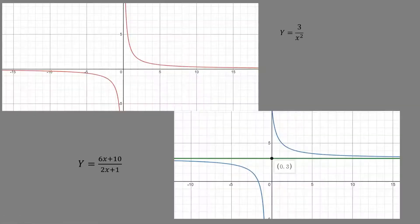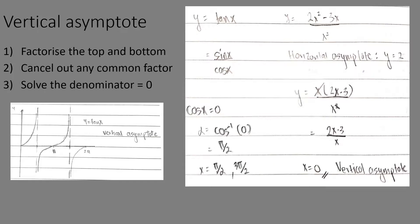For vertical asymptotes, factorize the numerator and denominator, cancel any common factors, then solve for when the denominator equals zero. For example, tangent x equals sine x over cosine x — solving cosine x equals zero gives x equals pi over two and 3 pi over two. For (2x squared minus 3x) over x squared, factorizing gives (2x minus 3) over x, so the vertical asymptote is x equals zero and horizontal asymptote is y equals 2.